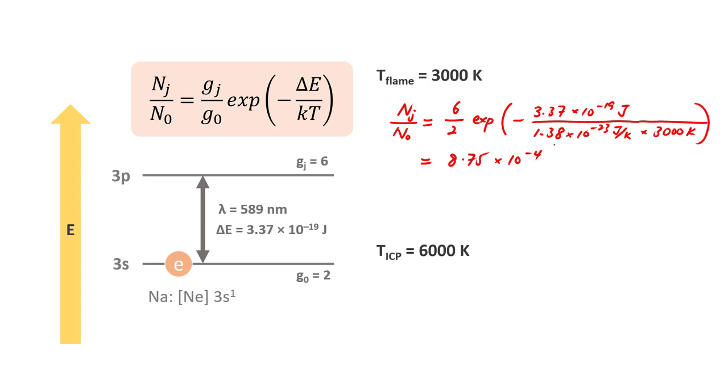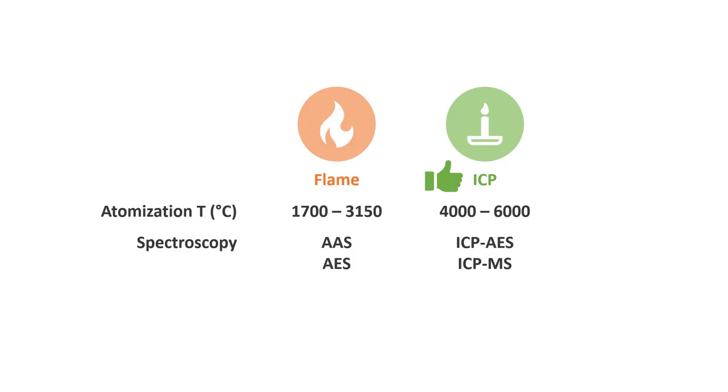So what would the Boltzmann distribution be if we were to use ICP with an atomization temperature of 6000 Kelvin? You may pause this video for 2 minutes now to try out the calculation. Welcome back. As we can see, simply changing the atomization temperature from 3000 Kelvin to 6000 Kelvin results in a 58 times increase in the excited state population, hence achieving a higher sensitivity in the case of sodium atoms.